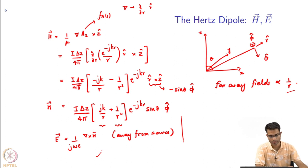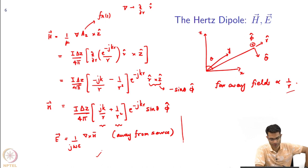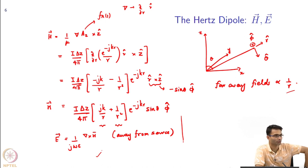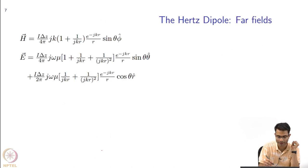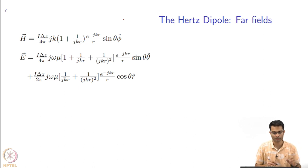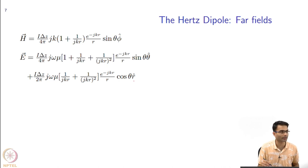If I now go to take the curl of this expression, what coordinate system will I use? Spherical — because it has R, theta, phi, everything is there inside it. So spherical is the best choice. When I take the curl, I get two components: the magnetic field was in the phi-hat direction, and then I have a theta-hat and an R-hat component.